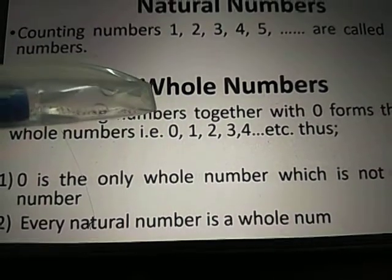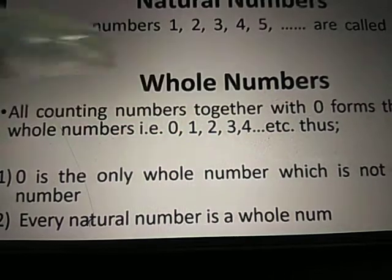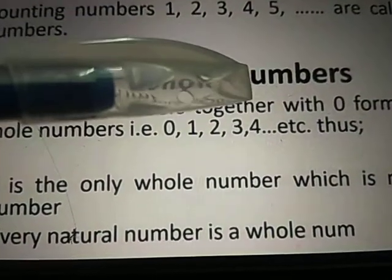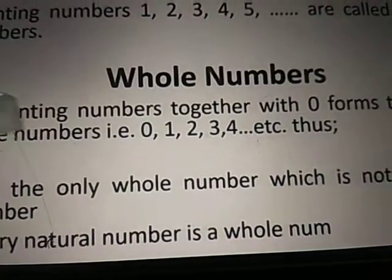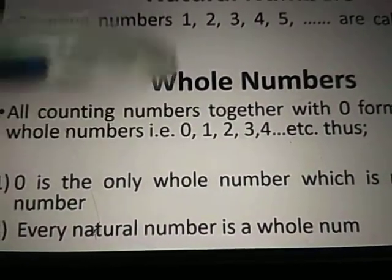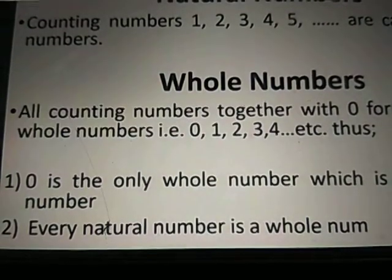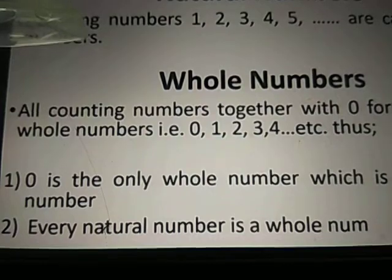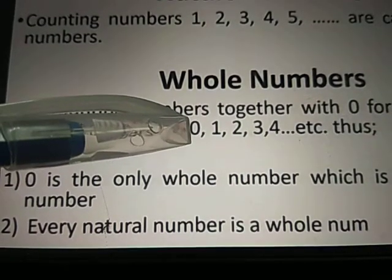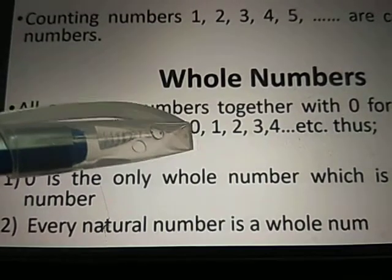The next number is whole numbers. What are whole numbers? All counting numbers together with 0 forms the set of whole numbers — that is, along with 0. Whole numbers include 0, but natural numbers do not include 0. The smallest whole number is 0.